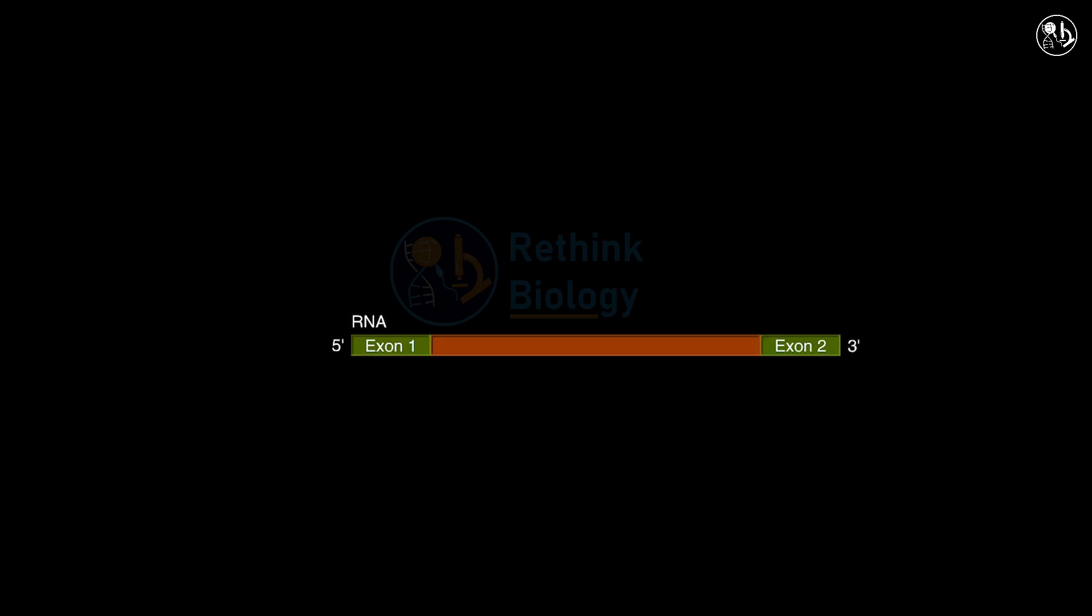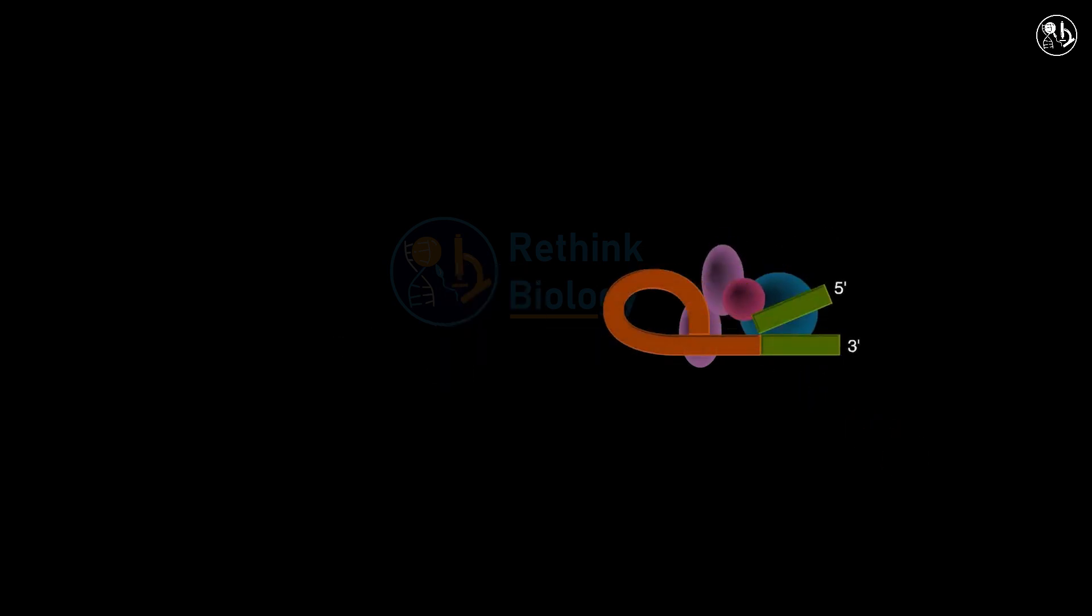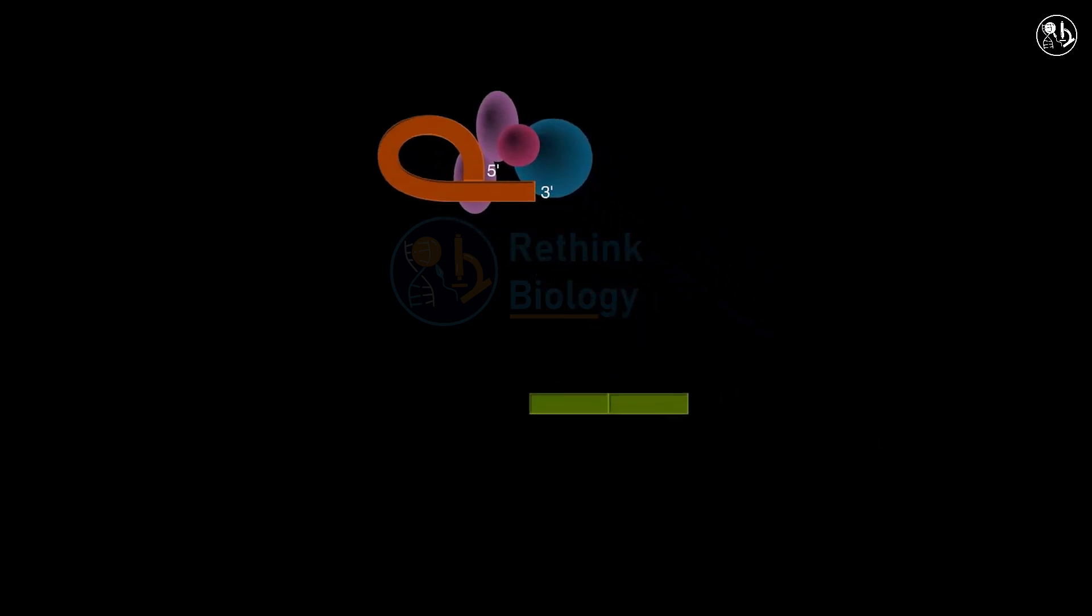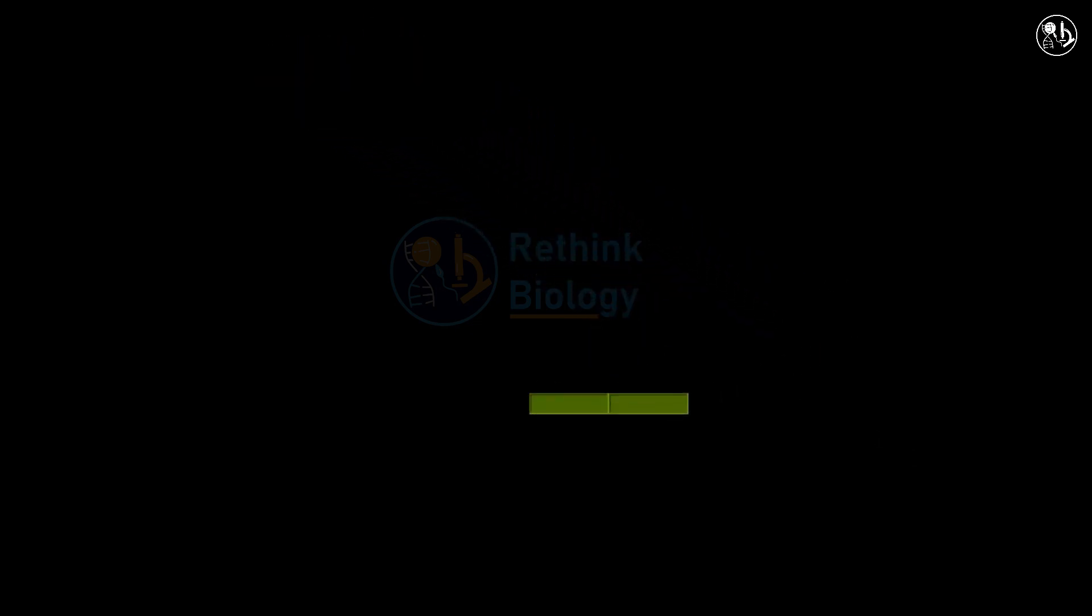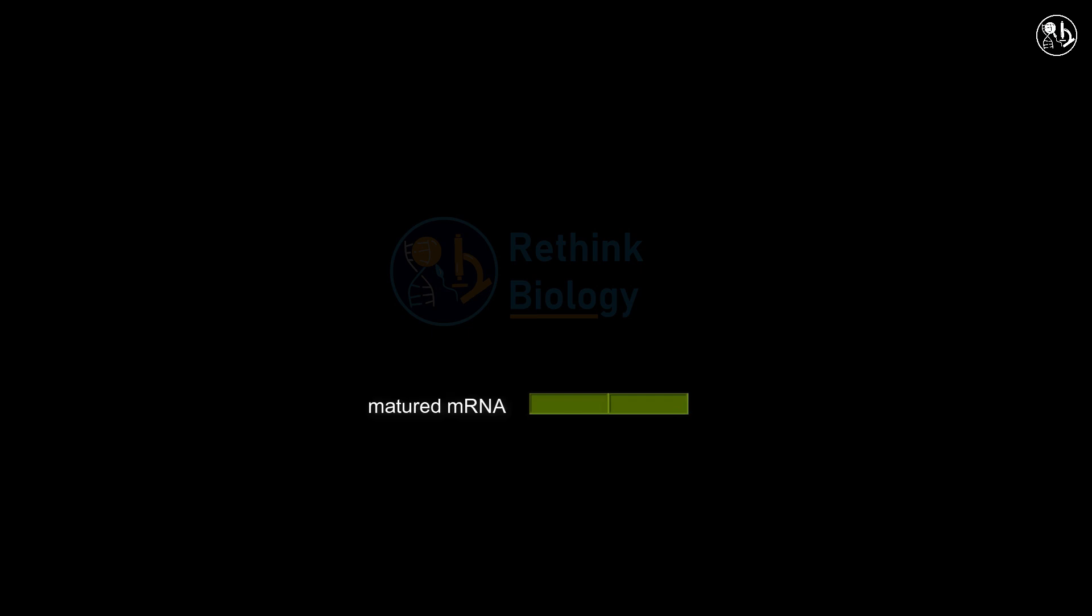Splicing is done by complexes of small nuclear RNAs (snRNAs) and proteins called snRNPs. The snRNPs bind to the intron, cut its left end from the upstream exon, loop the intron back, cut its right end from the downstream exon, and join the two exons together. The result is the mature mRNA without introns.